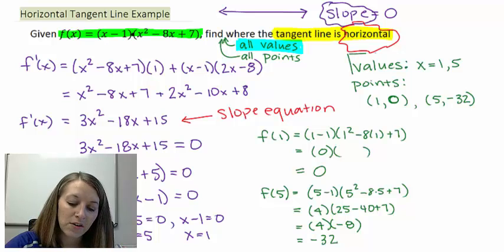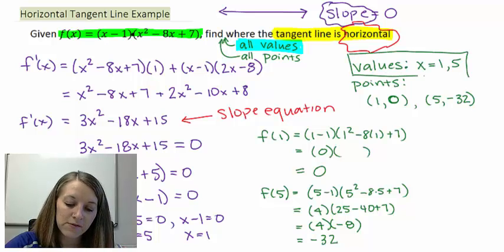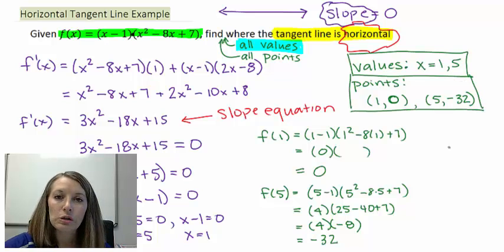So again, if it asks for values, you just need to do the x values. If it asks for points, then you need to come up with the ordered pair. So you need to substitute those x values back into the original equation.